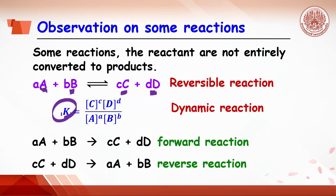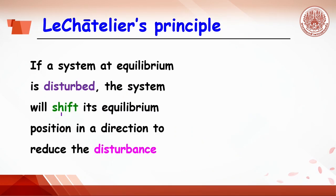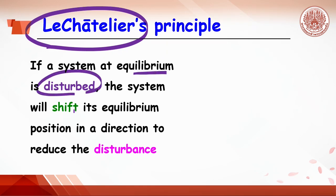With the equilibrium reaction, Le Chatelier found the principle that if the system at equilibrium is disturbed, the system will shift its equilibrium to the direction to reduce the disturbance.